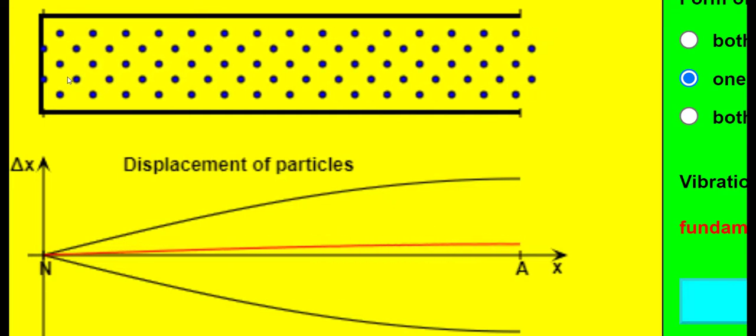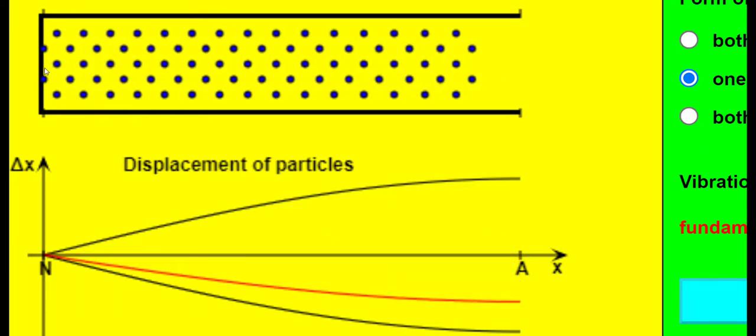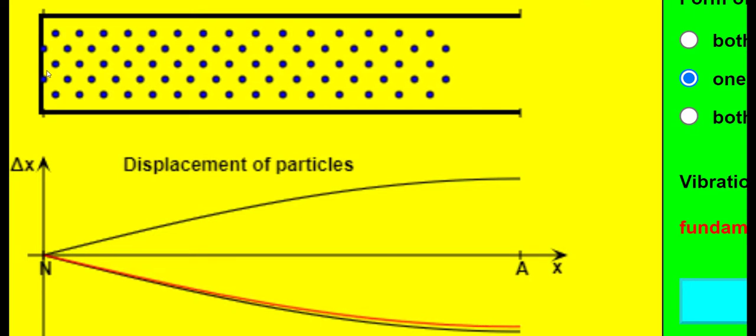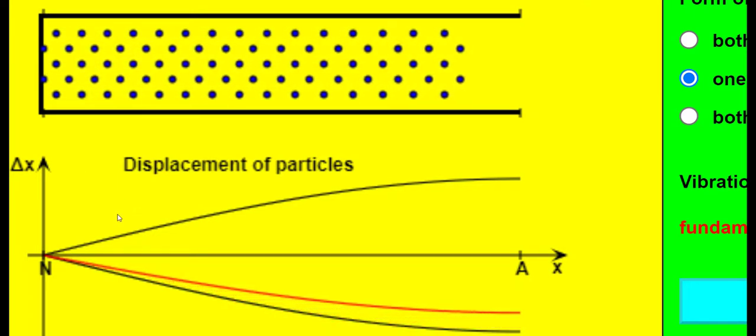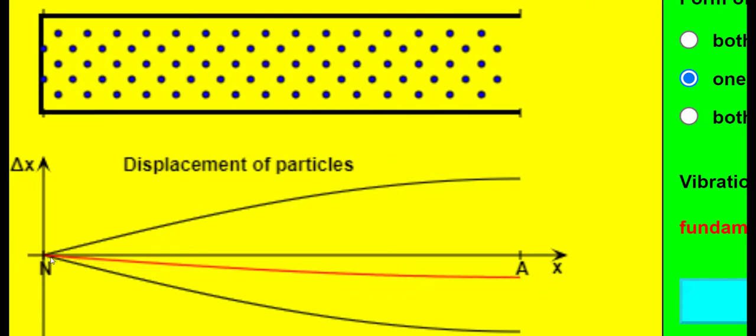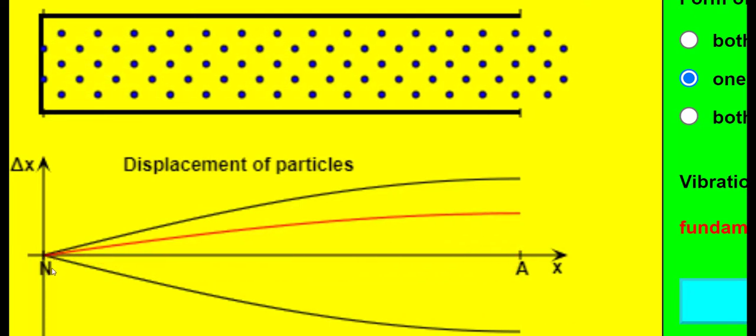Remember, a node is a point on a stationary wave of zero displacement at all times, just as the displacement position graph below is showing over here at the origin. Notice the N here, which stands for node.